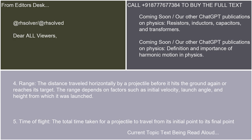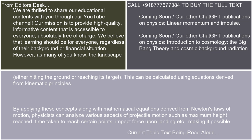4. Range — the distance traveled horizontally by a projectile before it hits the ground or reaches its target. The range depends on factors such as initial velocity, launch angle, and height from which it was launched. 5. Time of flight — the total time taken for a projectile to travel from its initial point to its final point, either hitting the ground or reaching its target. This can be calculated using equations derived from kinematic principles.